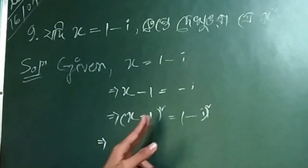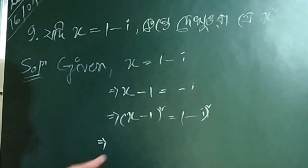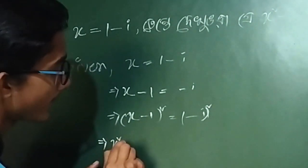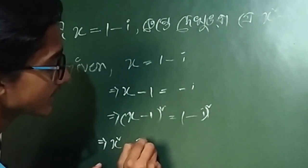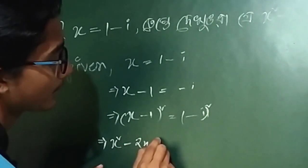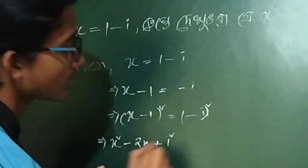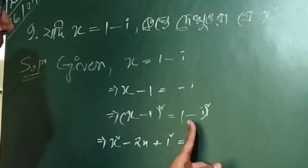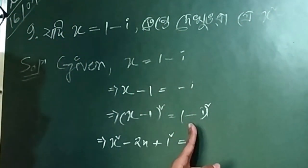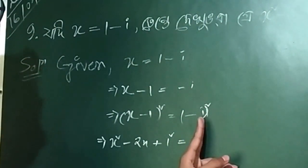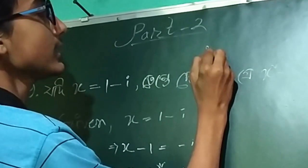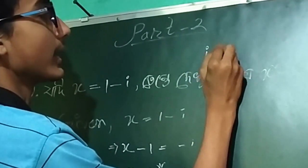So, x minus 1 whole square expands to x squared minus twice x plus 1, which equals minus i whole square.